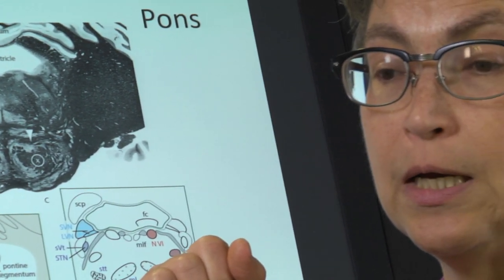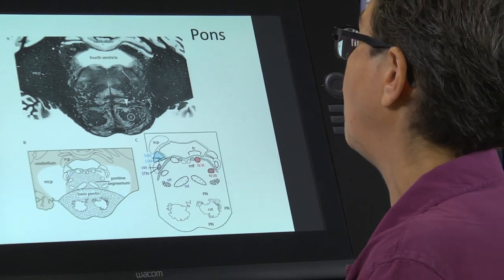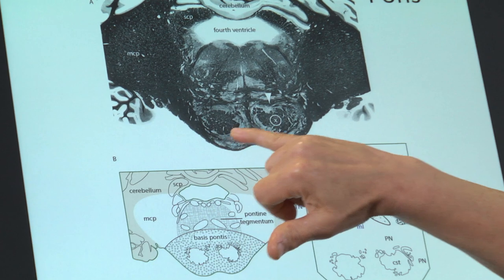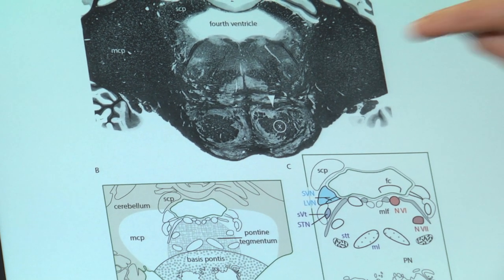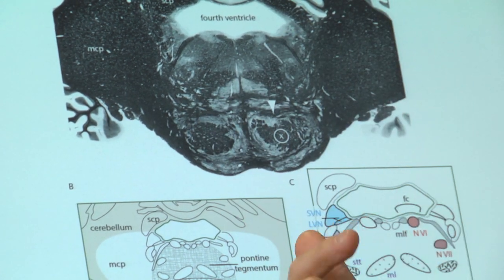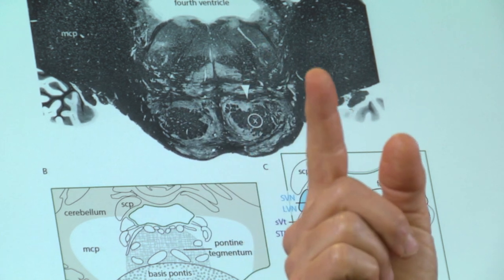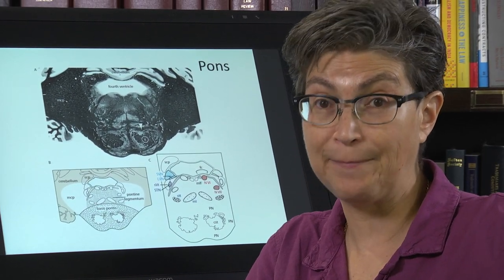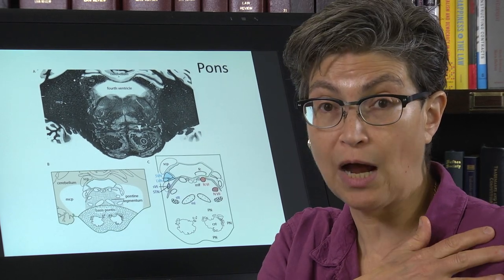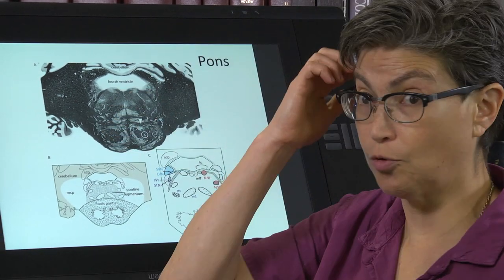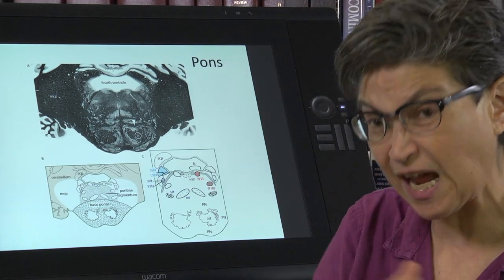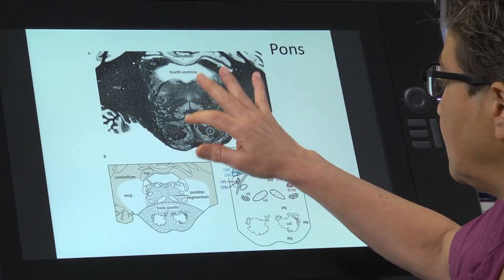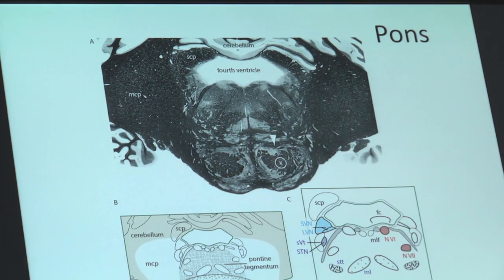We're going to go through the three pathways. Let's start with the pyramids — the corticospinal tract and corticobulbar tract. These are now located in the basis pontis. These are axons streaming through, coming from the ipsilateral motor cortex, going down into the pyramids before decussating at the spinal-medullary junction to control voluntary movement on the opposite side of the body — opposite arm, opposite leg. We'll discuss which side the corticobulbar tract ends on later.